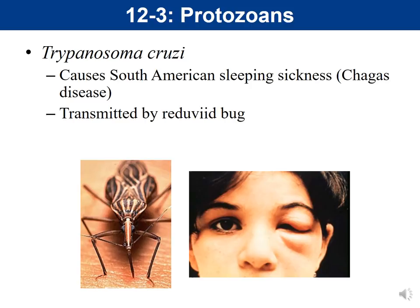Another disease caused by Trypanosoma — question 112 in your question sets — involves a species called Trypanosoma cruzi, which causes South American sleeping sickness, or Chagas disease. This is most prevalent in South America. This organism is transmitted not by a tsetse fly but by a reduviid bug, which is found in parts of South America and Mexico. It hides in crevices or cracks of poorly made houses, such as walls made of mud or thatched roofs.